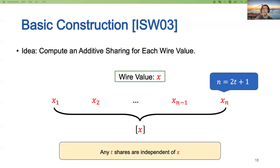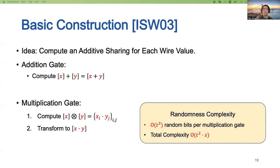The first construction is given in ISW03. The idea is to compute an additive sharing for each variable. For example, for a variable X, the goal is to compute X₁, X₂, …, Xₙ such that their summation equals X. In this way, any T shares are uniformly random and independent of X, and any T-probing attack reveals no information about the input.